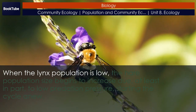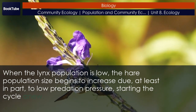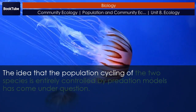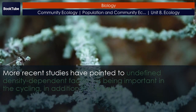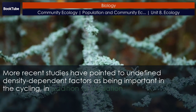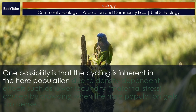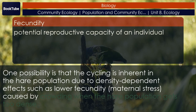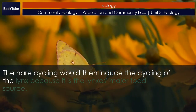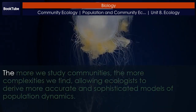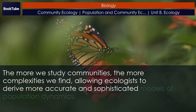A decline in the lynx population follows because of scarcity of food. When the lynx population is low, the hare population begins to increase due, at least in part, to low predation pressure, starting the cycle anew. The idea that population cycling is entirely controlled by predation has come under question. More recent studies point to density-dependent factors such as lower fecundity and maternal stress caused by crowding when the hare population gets too dense. This hare cycling would then induce the cycling of the lynx, because the hare is the lynx's major food source. The more we study communities, the more complexities we find, allowing ecologists to derive more accurate and sophisticated models of population dynamics.